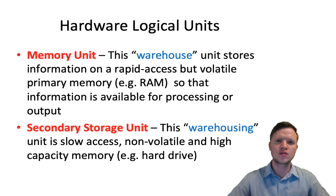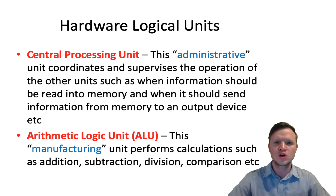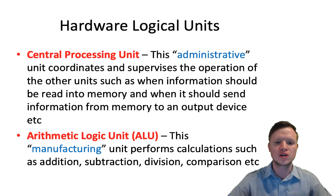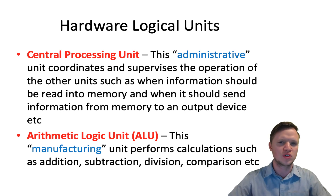Then we look at the processing part of the computer, which is divided into two things. We've got the CPU, the central processing unit — this accounts for all the administrative tasks. The CPU administrates everything in the computer: what needs to be done, what needs to be sent to whom, etc. Then we've got the ALU, the arithmetic logic unit, which can be seen as our manufacturing plant. This is where all the calculations are done — addition, subtraction, etc. So the ALU is our manufacturing side, whereas the CPU is our administrative part.